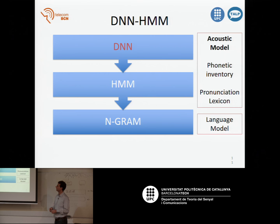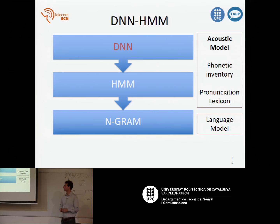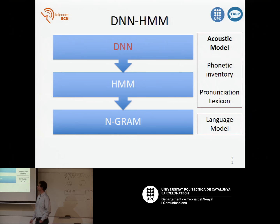In this presentation, I'll talk about one speech recognition system developed by Baidu Research. Baidu is a Chinese company, and Baidu Research has a group working on speech recognition in Silicon Valley. They are more experts in deep learning than in speech recognition, and they tried to replace at least two blocks with just a recurrent neural network.